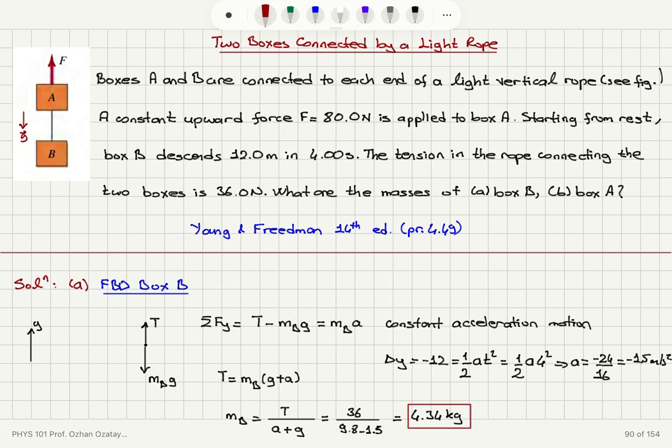So to summarize, in the previous problem, we had a heavy rope, now we have a light rope. And we're applying an external force on box A that's trying to pull it up, but the system actually descends. Box B descends 12 meters in 4 seconds. And from this information, I gathered that it should be a constant acceleration motion, because all forces are constant here.